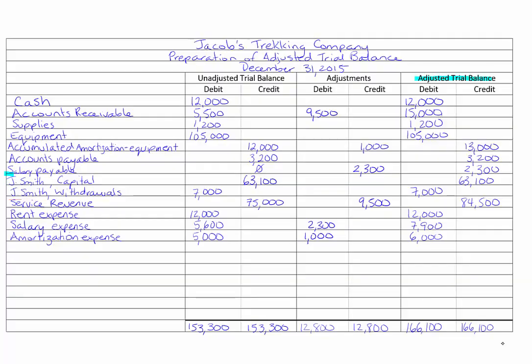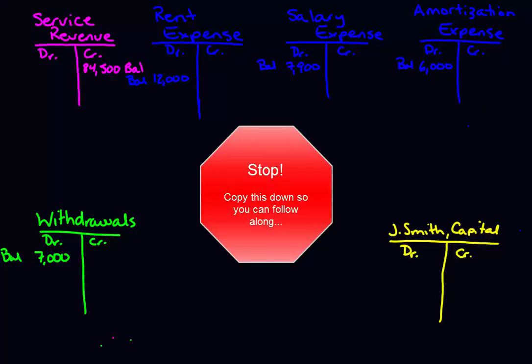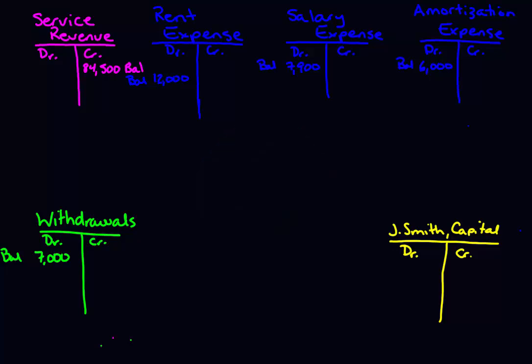I'm going to bring up an example here that we were looking at previously for Jacob's Trucking Company, and we're going to concentrate on the adjusted trial balance. We need to close revenues, expenses, and withdrawal accounts. So the accounts we're going to close are: withdrawals, service revenue, rent expense, salary expense, and amortization expense. I'm going to put these all into T-accounts showing their balances. I've drawn T-accounts for service revenue, rent expense, salary expense, amortization expense, and withdrawals. I've also added a T-account for the capital account, because that's where our balances are going to end up once we close the revenues, expenses, and withdrawals.